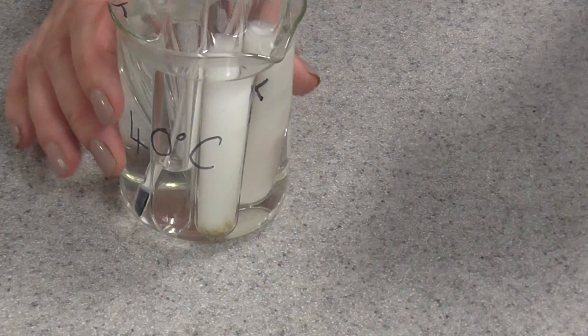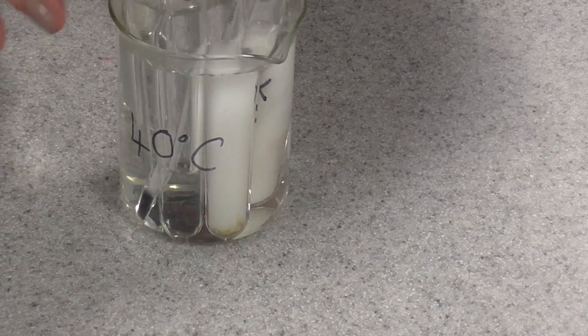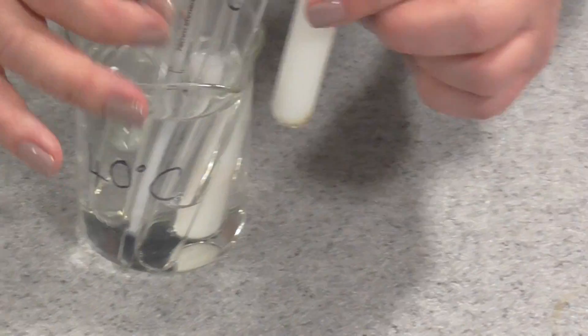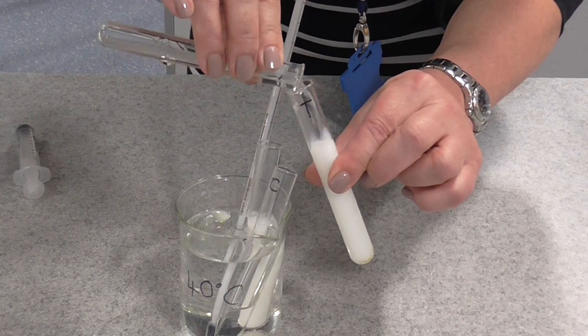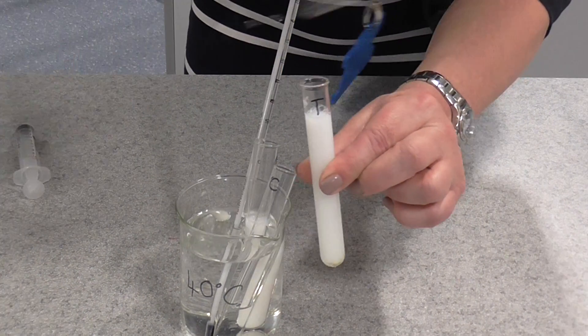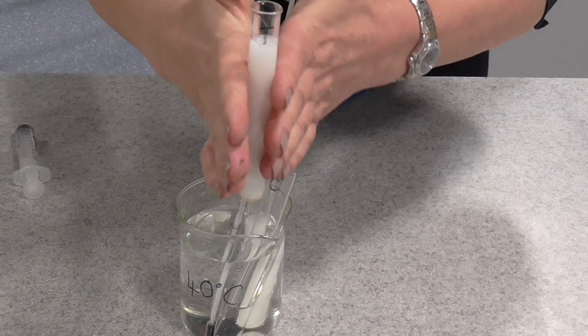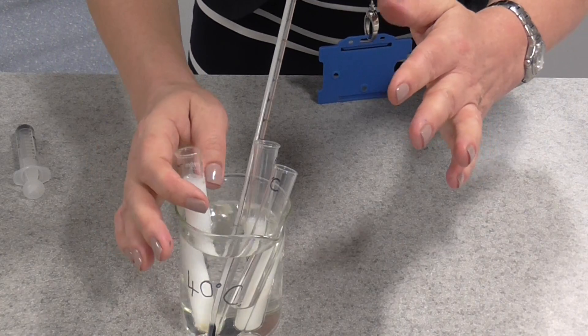The next thing we're going to do then, into our tube of milk labelled T, we're actually going to add the trypsin enzyme. We can get rid of that tube now. We're going to give it a little mix, and then we're going to place it back in the water bath.